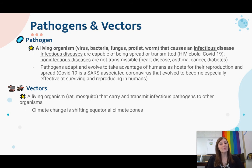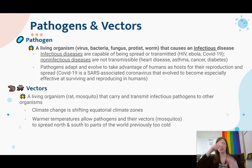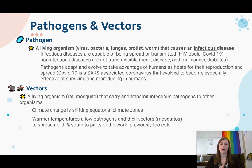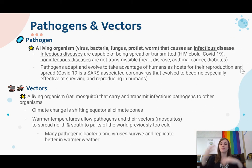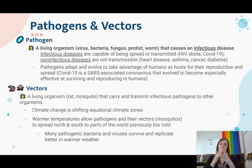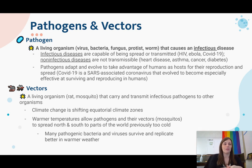One of the things to be aware of with vectors is that climate change is shifting our equatorial climate zones, so they're moving farther north and south, not just along the equator. Warmer temperatures are going to allow pathogens and their vectors to spread north and south to parts of the world that were previously too cold, because many pathogenic bacteria and viruses survive and replicate in warmer weather. As we're getting warmth spreading, the pathogens and the mosquitoes will be spreading too.